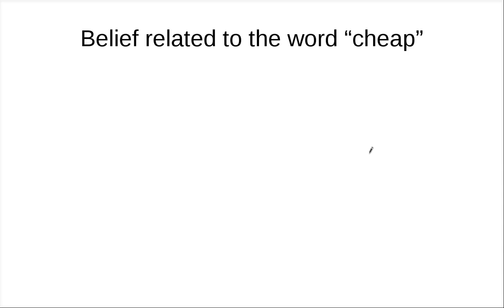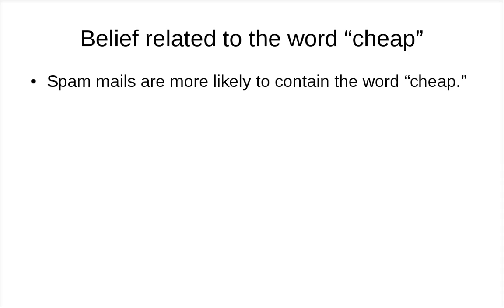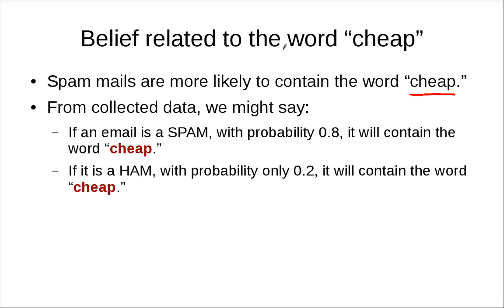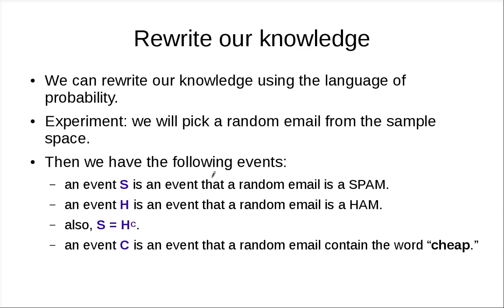We also want to write a belief related to the word 'cheap'. We may guess that spam mails are more likely to contain that word. Using collected data, we might say: if an email is spam, with probability 80% it will contain the word cheap. And if it is a ham, there's only a 20% probability that it will contain the word cheap.